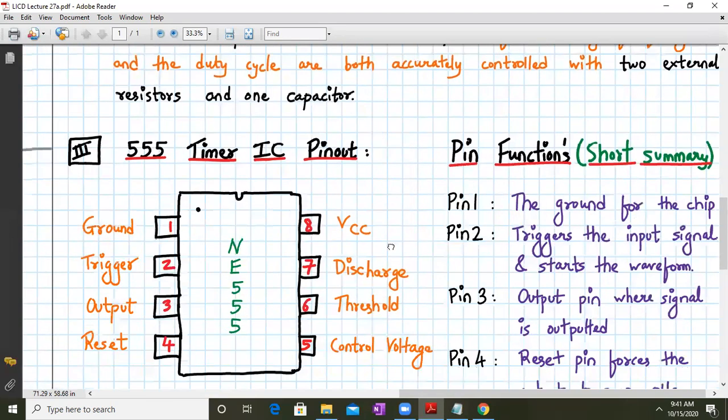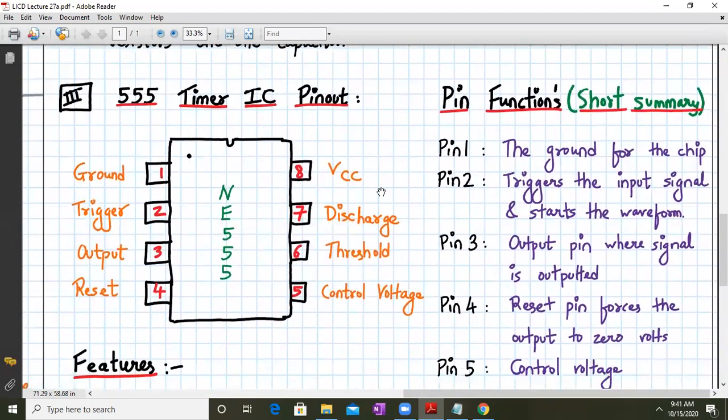So in a time delay mode of operation for this 555 timer, the time is precisely controlled by one external resistor and capacitor. Now this you will understand in few lectures. And for stable operation as an oscillator, the free running frequency and the duty cycle are both accurately controlled with two external resistors and a one capacitor. So this is my 555 timer IC pinout. So basically it's very important. There are a lot of applications of any for 555 timer.